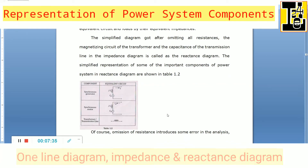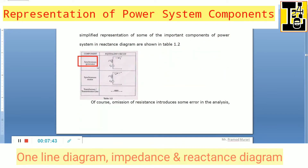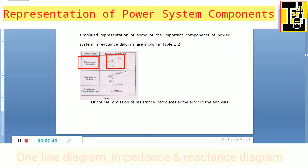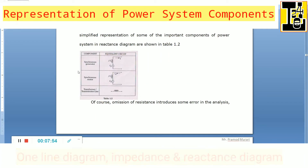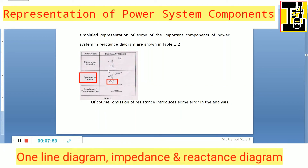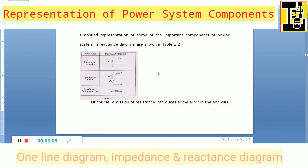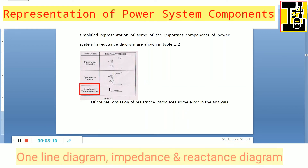The simplified representations of important components in the reactance diagram are as follows: The synchronous generator is represented by an EMF source in series with a reactance on a single phase equivalent circuit. Similarly, the synchronous motor is represented by an EMF source in series with reactance. Transformers and transmission lines are simply represented by a reactor with respect to the reference.